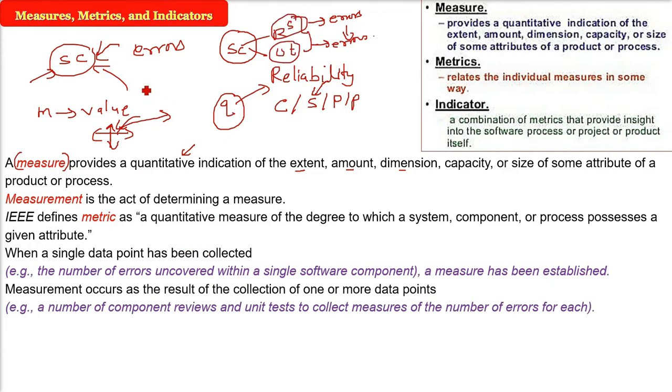And this is also we are using to collect the measures of the number of errors for each. So here we have two data points. Previously, it was one data point. So when we established a measure, then we go to multiple data points in order to collect more data. And this becomes a measurement. When we have multiple data points, it becomes measurement.